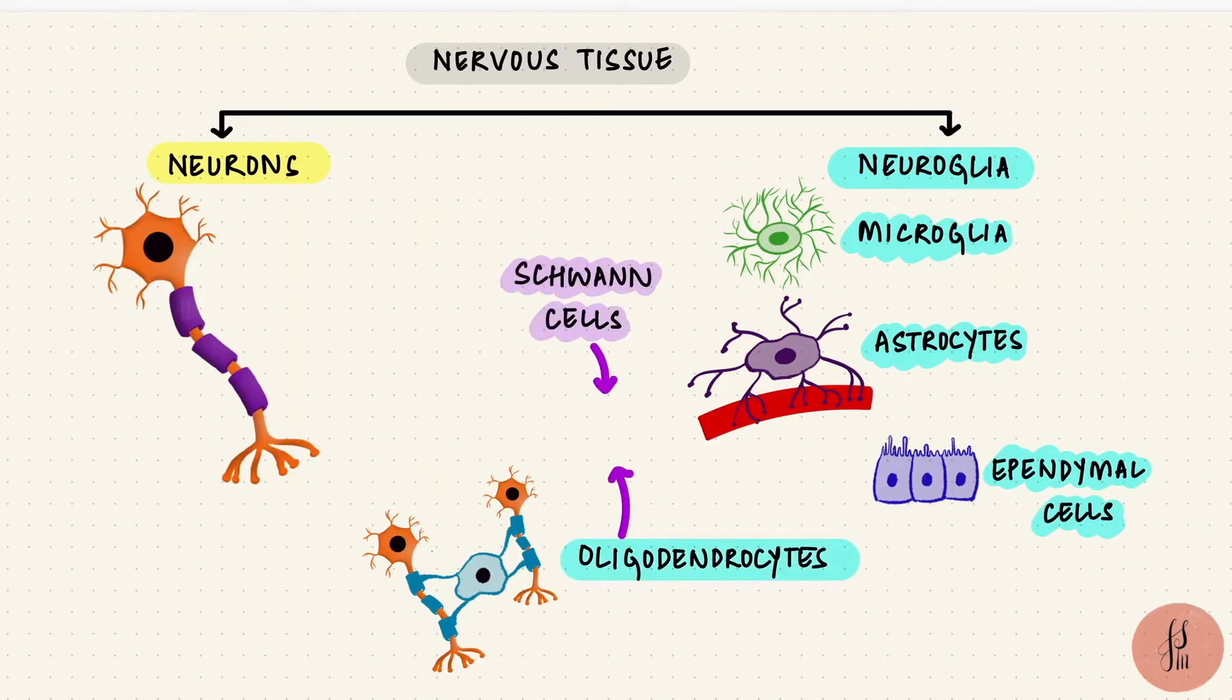Now these too are important for myelinating these neurons. Oligodendrocytes in the central nervous system, Schwann cells in the peripheral nervous system. In this video, we're going to look at the structure of a neuron.